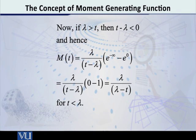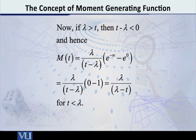e raised to minus infinity means 1 over e raised to infinity, and 1 over infinity means 0. Therefore M of t is equal to lambda over (t minus lambda) multiplied by (0 minus 1), which gives lambda over (lambda minus t). So the moment generating function's final answer is lambda over (lambda minus t), and remember this exists under the condition that t is less than lambda.